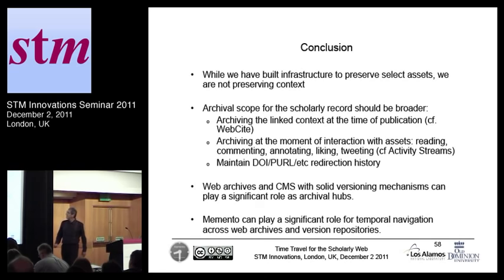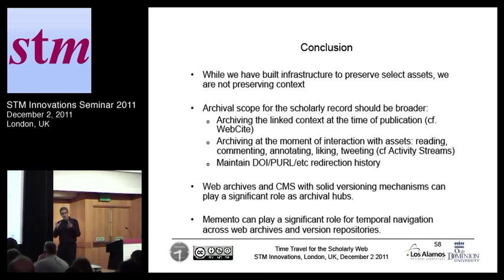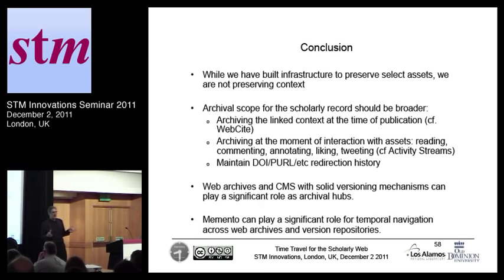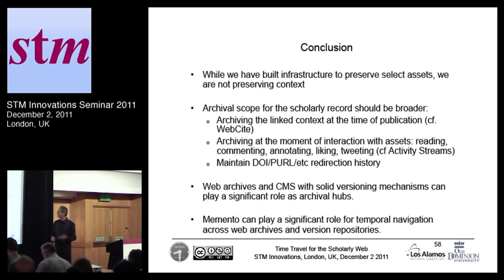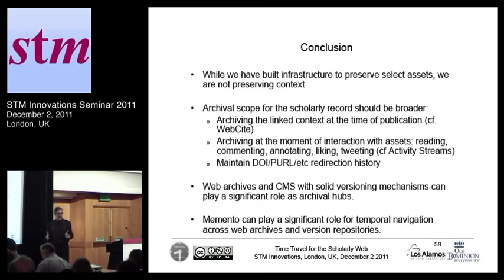To conclude: we have been very good with efforts like Portico, LOCKSS, and the Keepers Registry to start archiving the assets of the typical journal system. We are not doing a good job at all with the peripheral materials that I think will become much more important over time as scholarship evolves. So we need to start thinking about actively archiving that kind of material — for example, at the time of publication, dereference the citations and archive them. I think we should start seriously thinking about maintaining the history of DOI and Perl redirect histories, in order to be able to do time travel across these kinds of links.